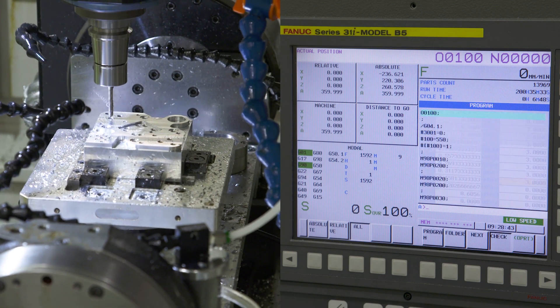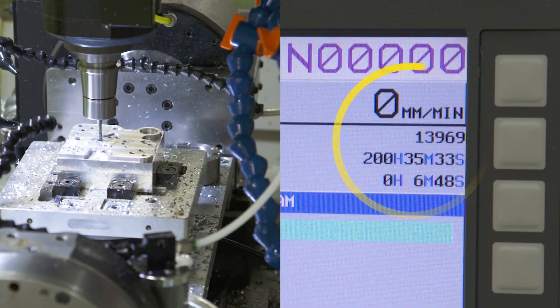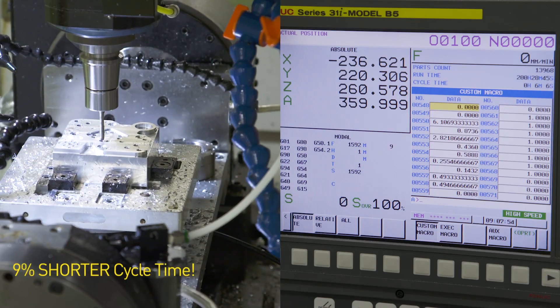By simply adjusting the Easy Tuning page, our sample part went from 6 minutes and 30 seconds to 6 minutes. This is a 9% reduction in cycle time without tuning.